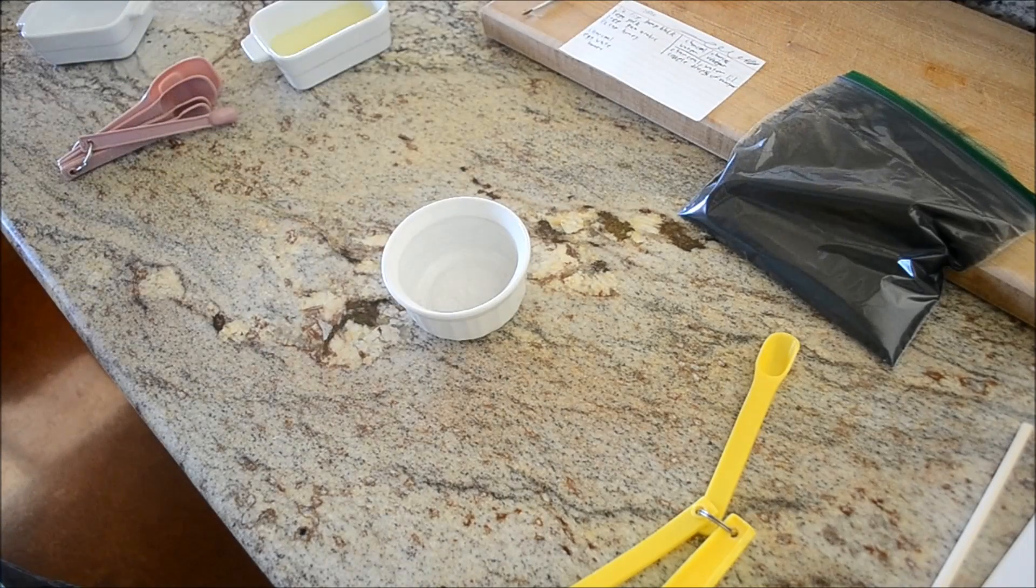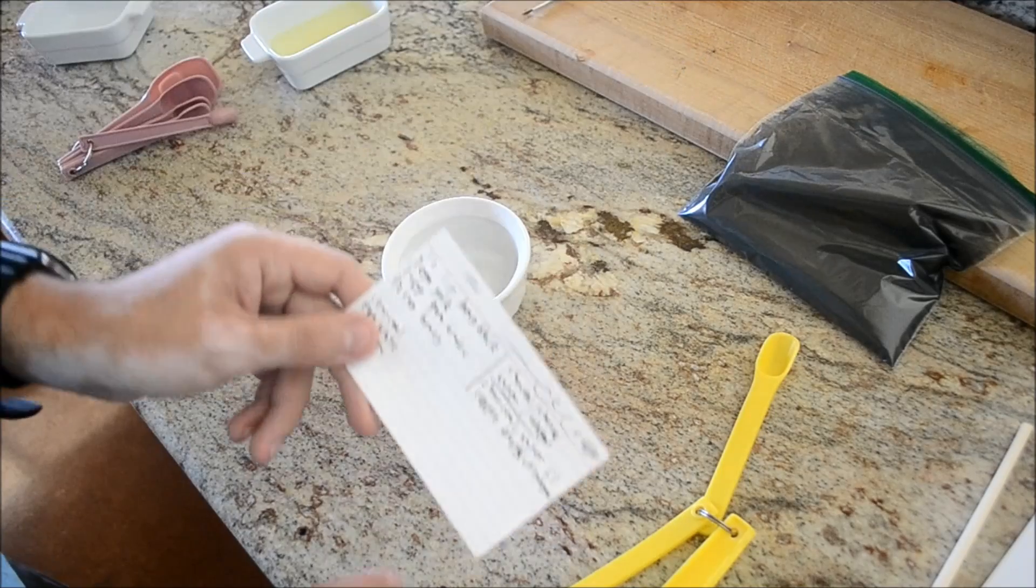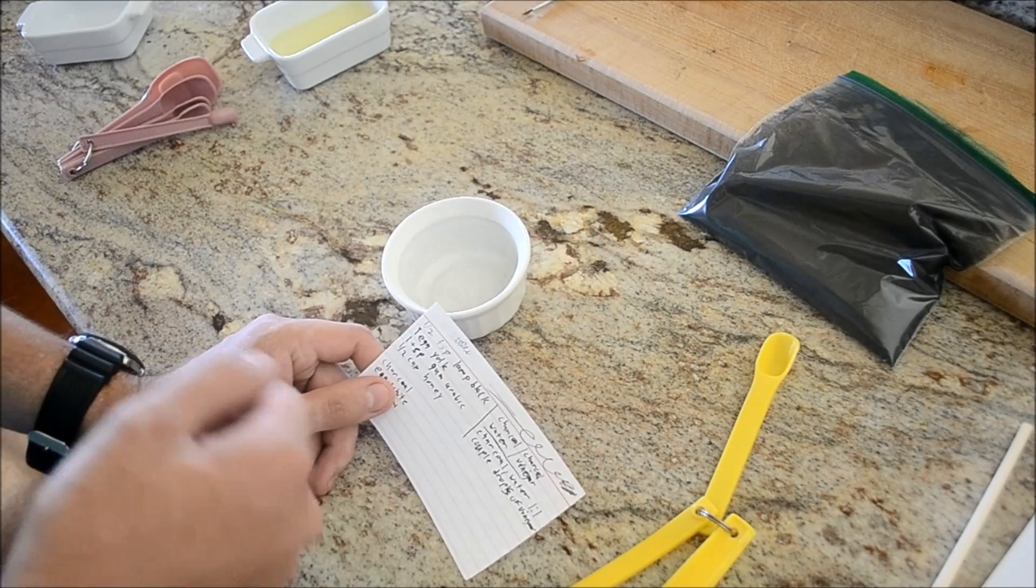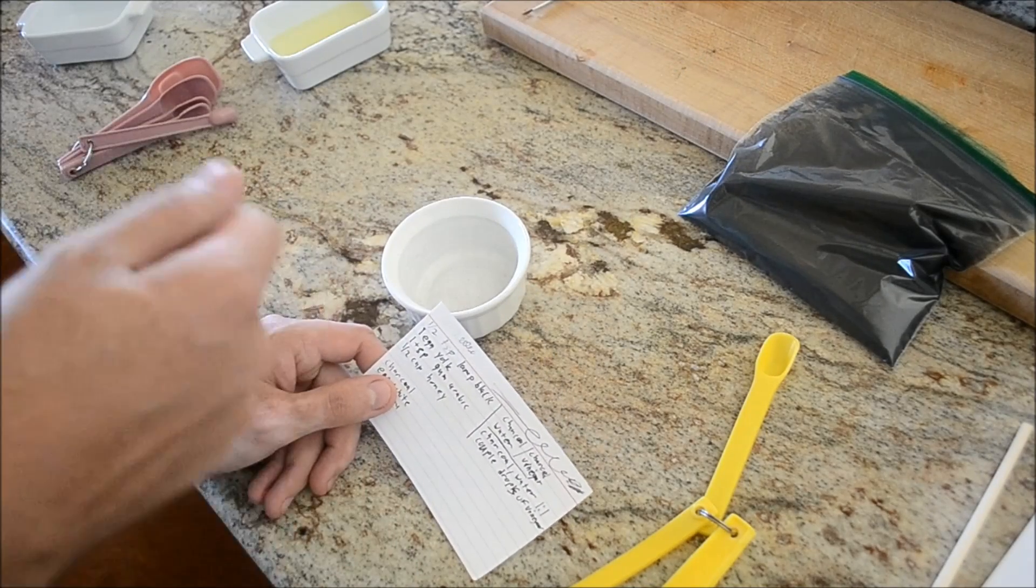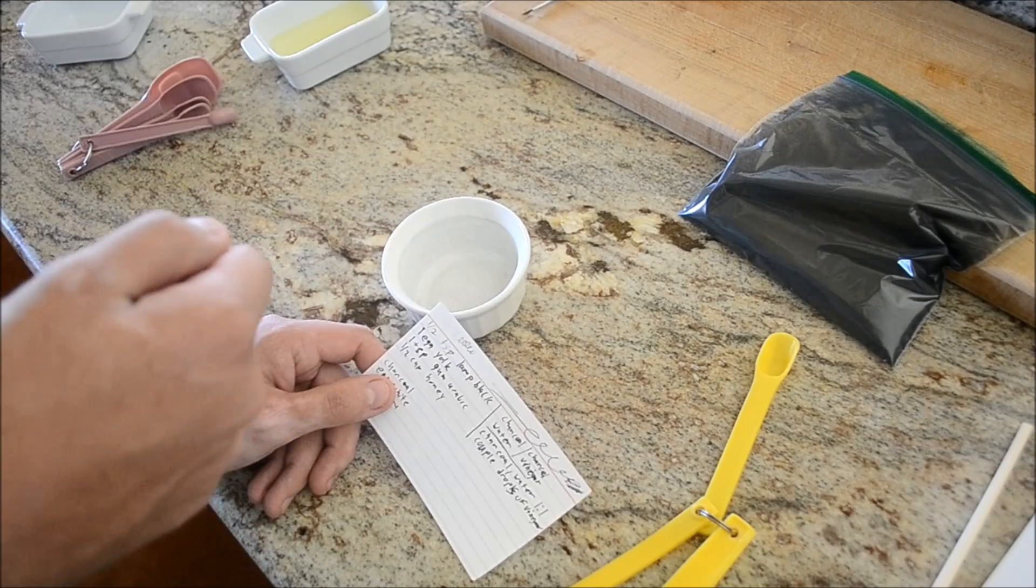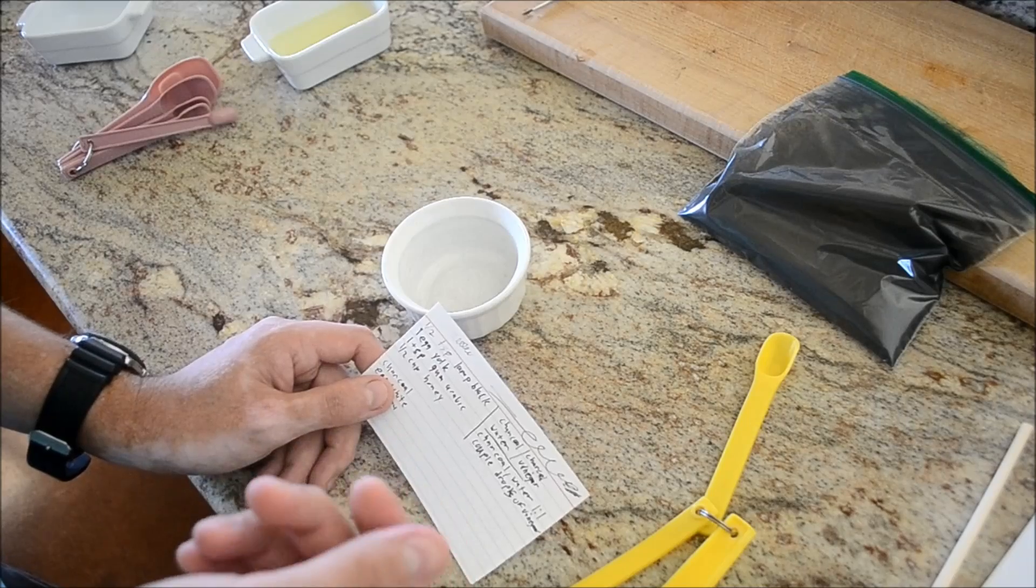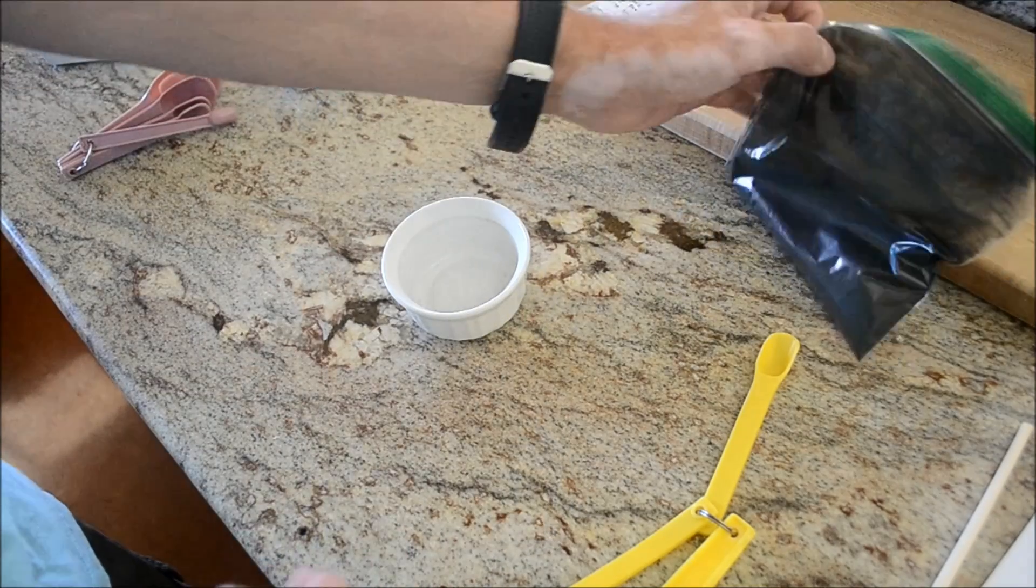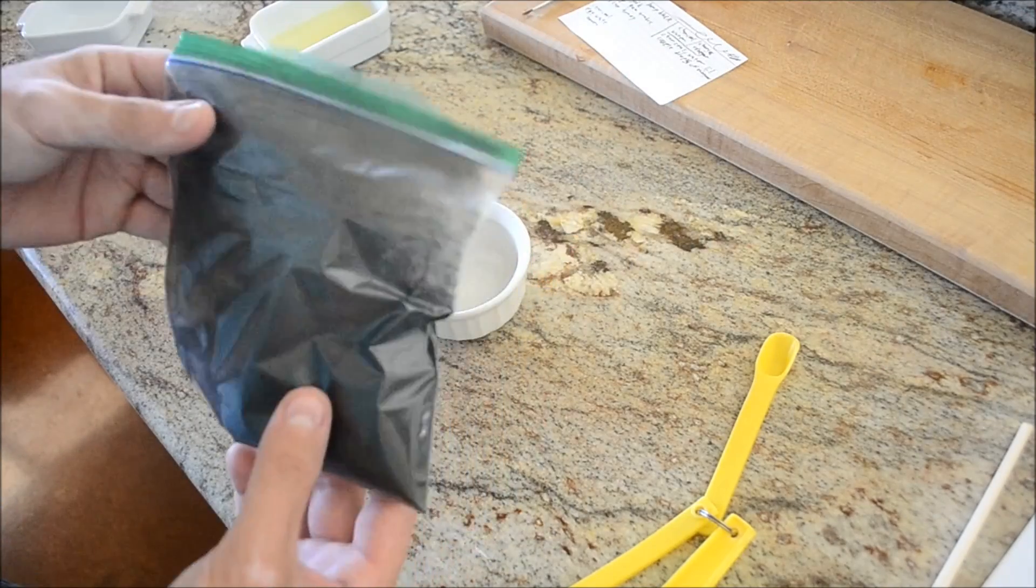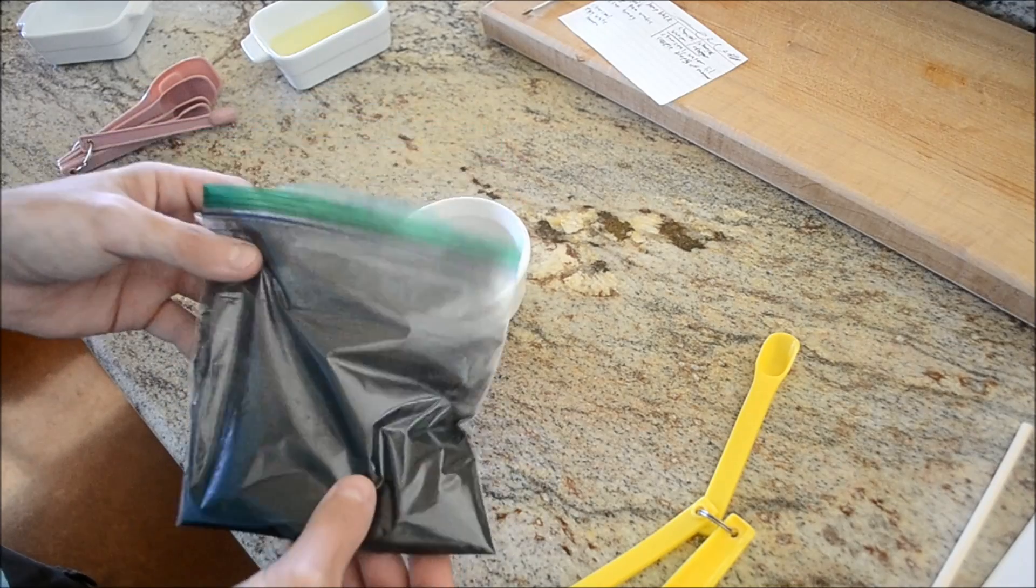The first one is going to use lamp black, which is basically what you get from holding a piece of metal over a candle so that the soot collects on it. It's very fine, much finer than the charcoal I could grind up with the mortar and pestle, but I'm still going to use charcoal.